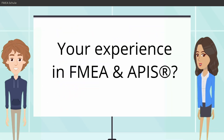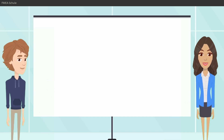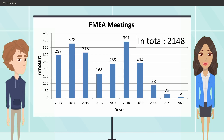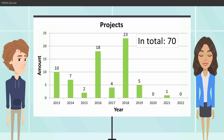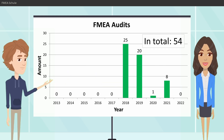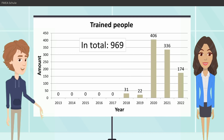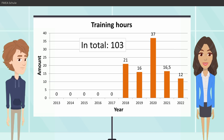And what is your experience with FMA and APIS? Since January 2013 I am dealing 100% with APIS. I moderated 2,148 FMA meetings with a total of 3,513 meeting hours. I was involved in 70 FMA projects. I performed 62 FMA reviews with customers and suppliers. I performed 54 FMA audits, internal and external. And trained 969 people about APIS and FMA in 50 training sessions with a total of 103 training hours.